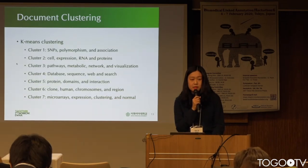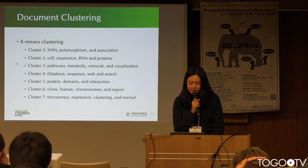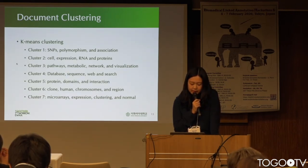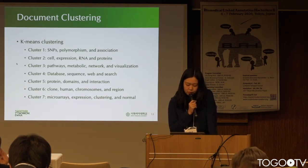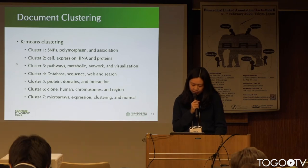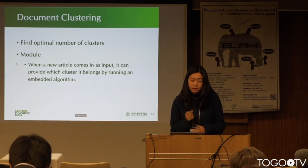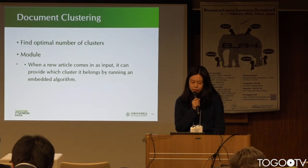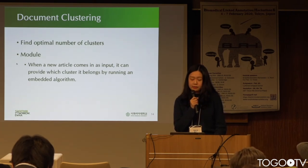Publications in cluster 1 seem to belong to association studies and cluster 2 to microarray and expression studies. Cluster 3 is related to pathway studies, and cluster 4 to database and computational methods. Cluster 5 seems to be related to studies of protein interaction, and the keywords for clusters 6 and 7 are on the screen — we couldn't come up with the right names for these clusters. I would like to find the optimal number of clusters and design a module or web service that, when a new article comes in as input, can identify which cluster it belongs to by running an embedded algorithm.